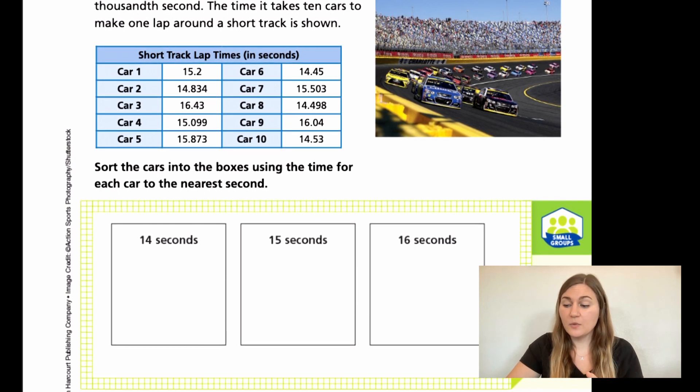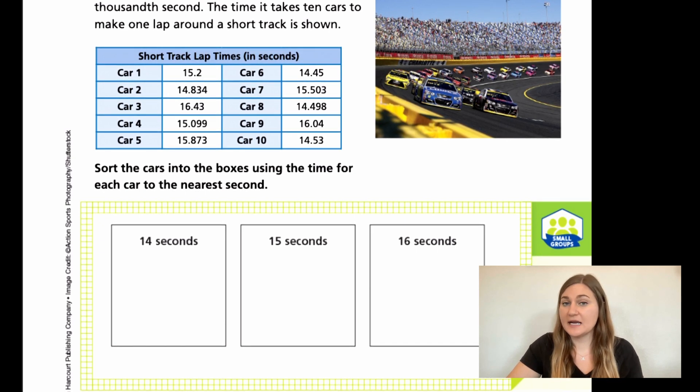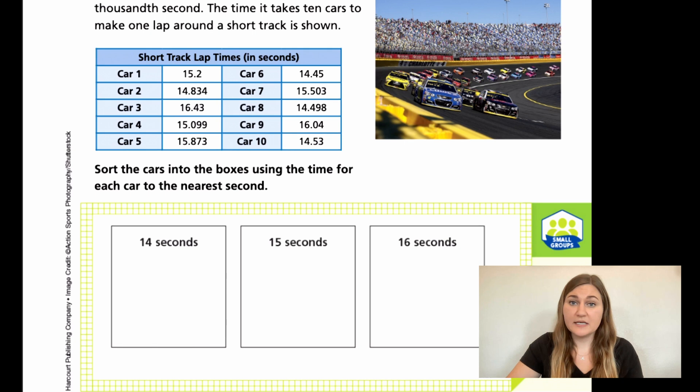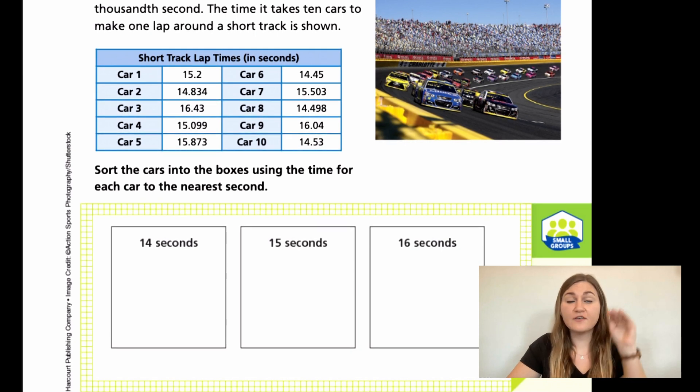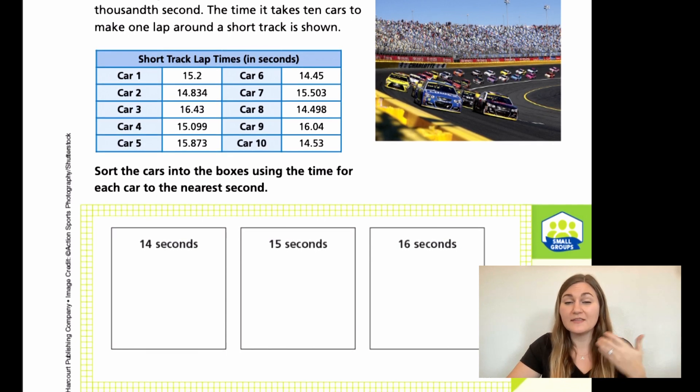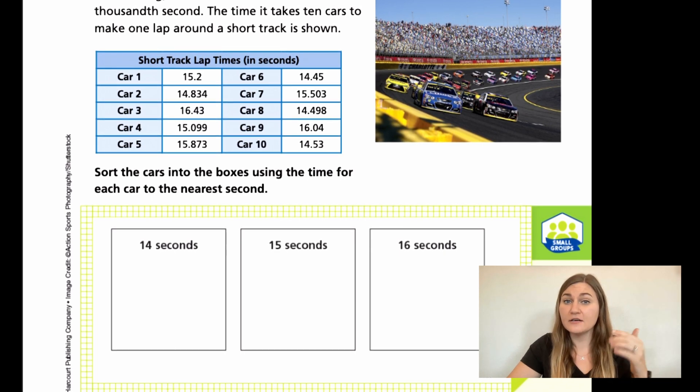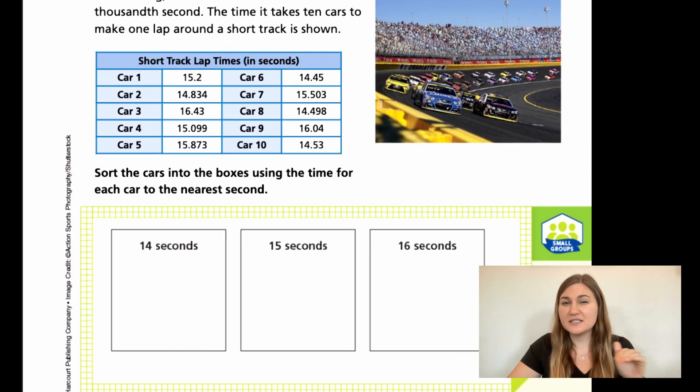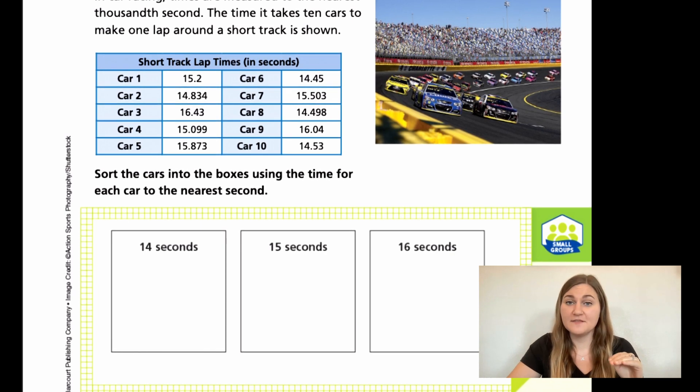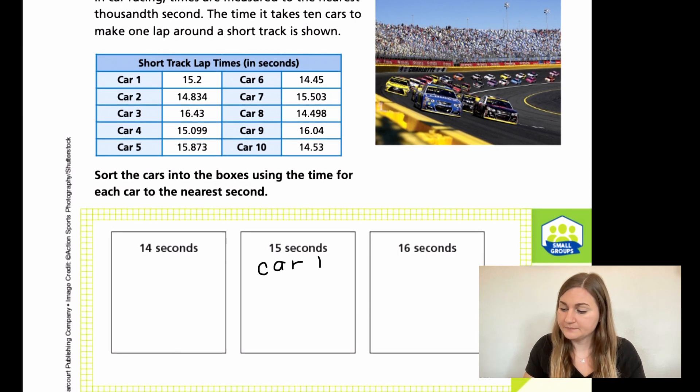So if we look at car number one, it says 15.2. When we round with a decimal, it works pretty much the exact same way as rounding with whole numbers. If you had 16 and you wanted to round it up, it would go to 20 because our number 5 or higher goes up or 4 or lower stays at that number. So we would be looking at the next digit in the tenths place, so the number right next door after the decimal. If it's 5 or higher, it would go up to the next whole number. Or if it's not, just keep it at the number it's at. So 15.2, 2 is pretty small, so we're going to keep it at 15 seconds. So we're going to put car one right here.